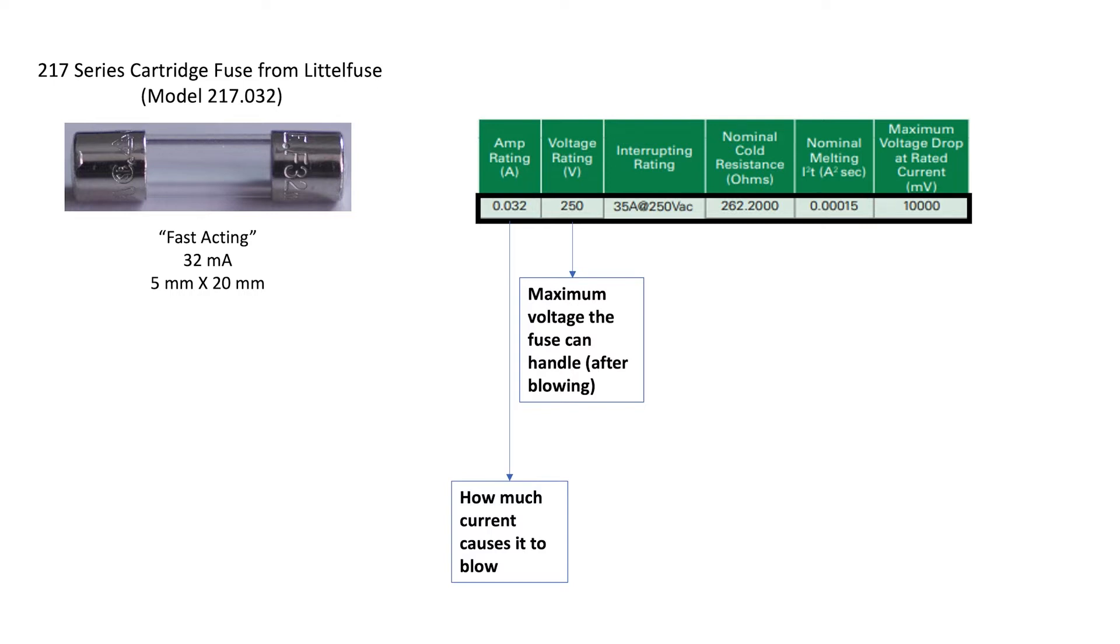The next parameter here is the interrupting rating. That's the maximum expected short circuit current. That's different from the current rating of the fuse that causes it to blow.